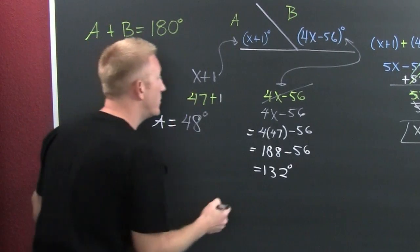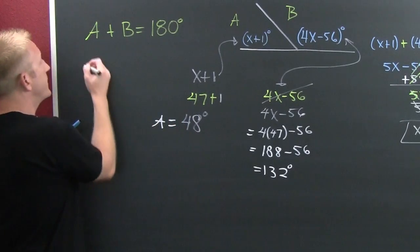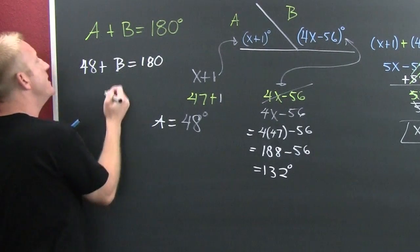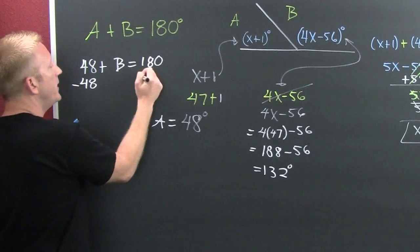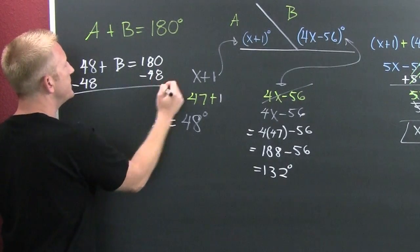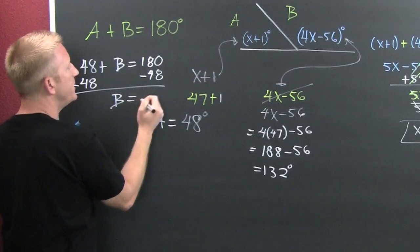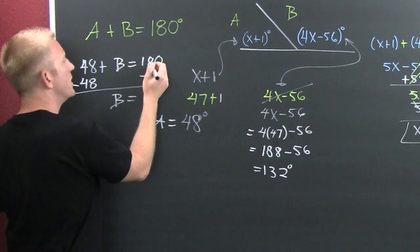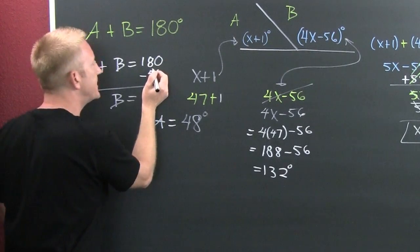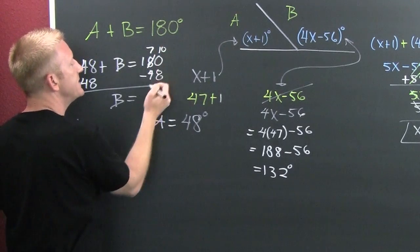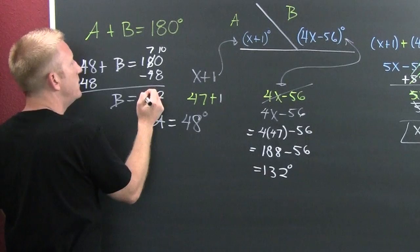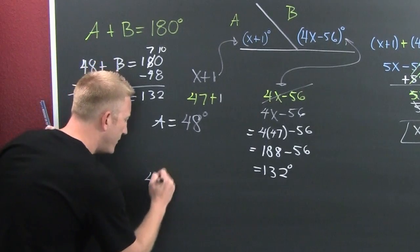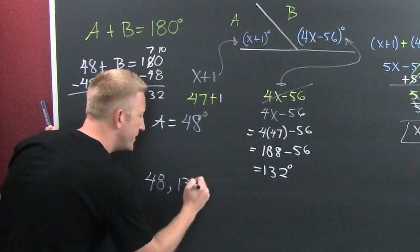There's an easier way though. If I know angle A is 48 degrees, I can say 48 plus B equals 180 degrees, then subtract 48 from both sides. I need to borrow: 0 minus 8 requires borrowing, giving 10 minus 8 equals 2, then 7 minus 4 is 3, then 1 minus 0 is 1 — so B equals 132 degrees. Your two angles are 48 and 132 degrees.